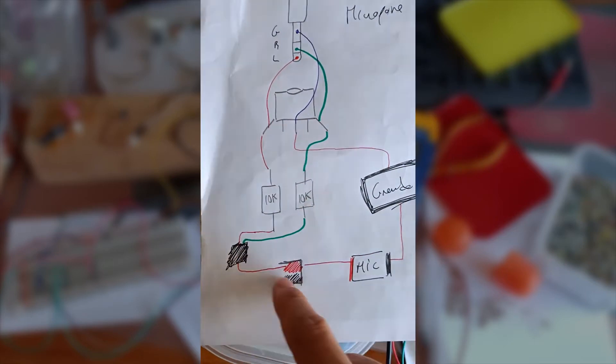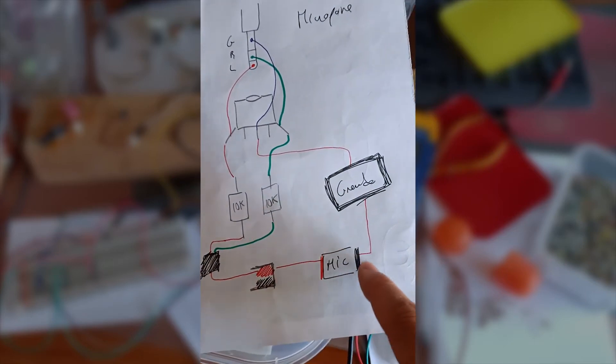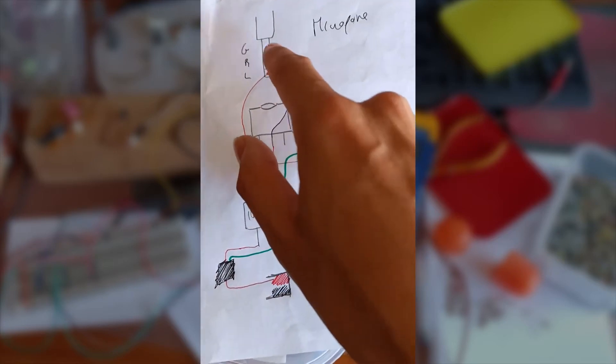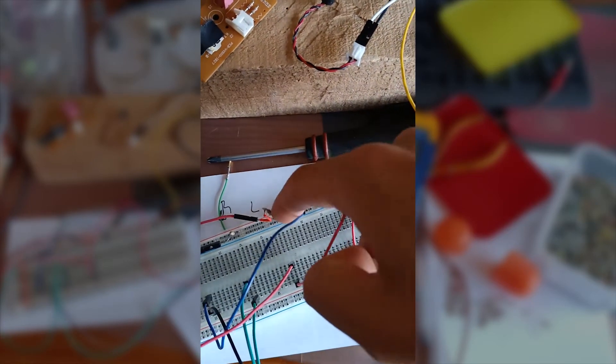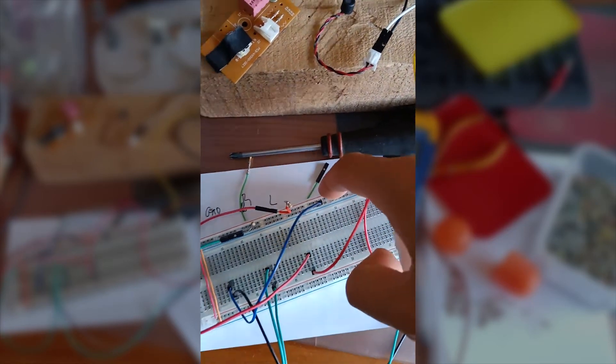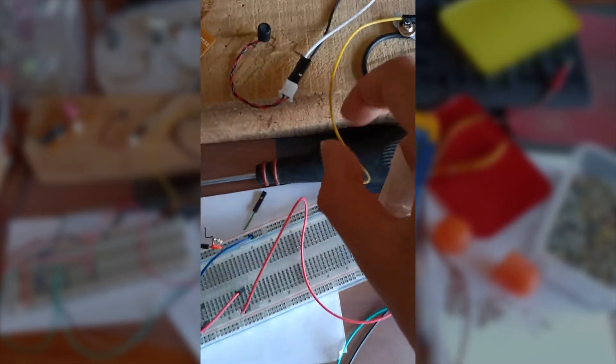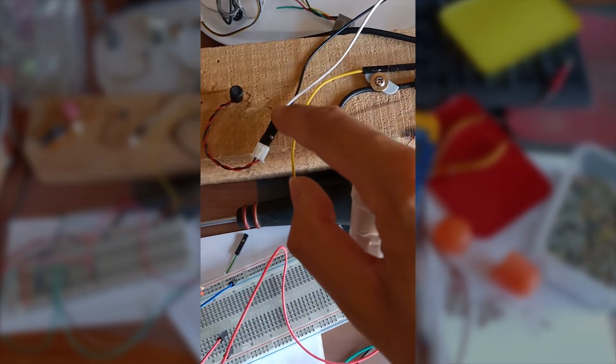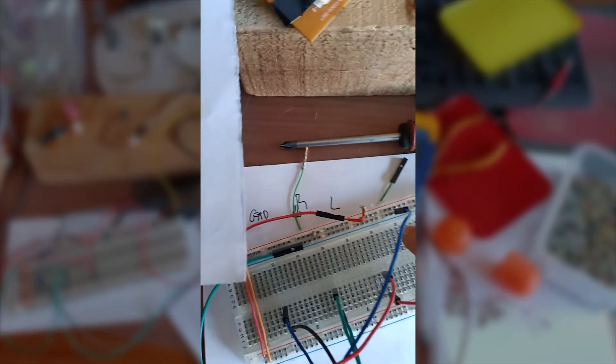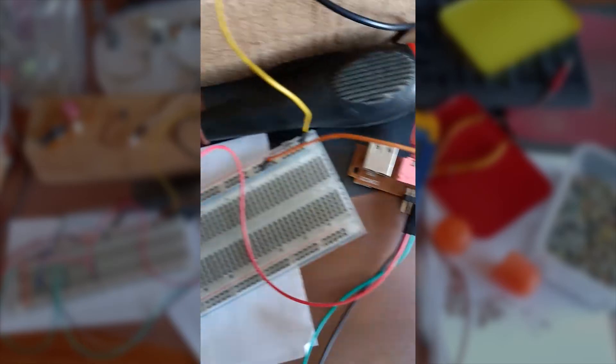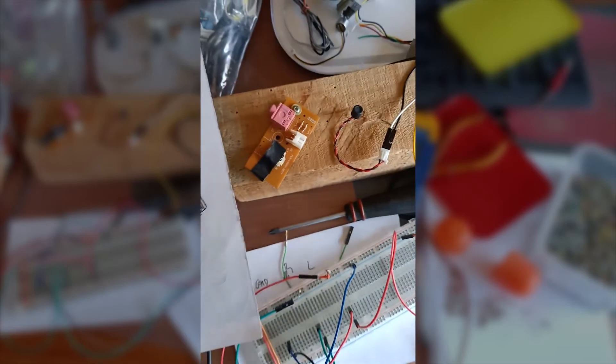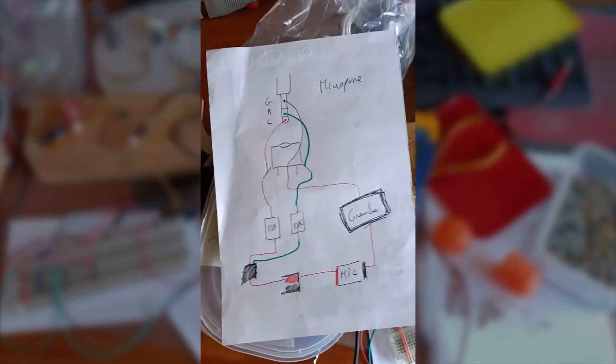Then both resistors go into the microphone and then go out to the ground, so they're connected on this row. Both resistors then go out here to the microphone, and then when it comes out, it goes back here to the ground. It goes to the ground of the jack, and that's how this prototype works.